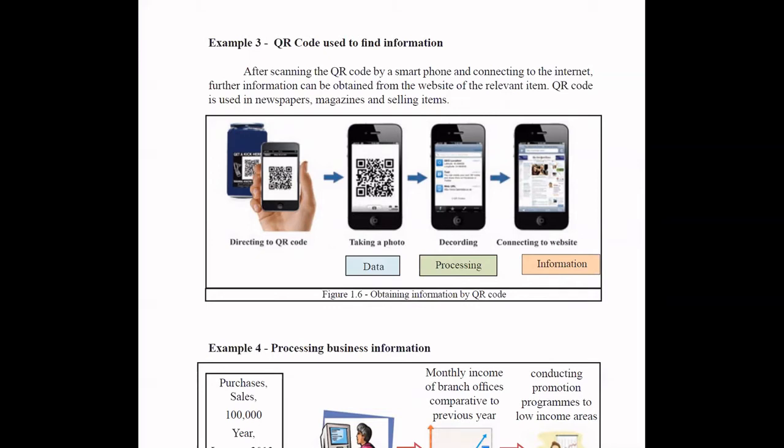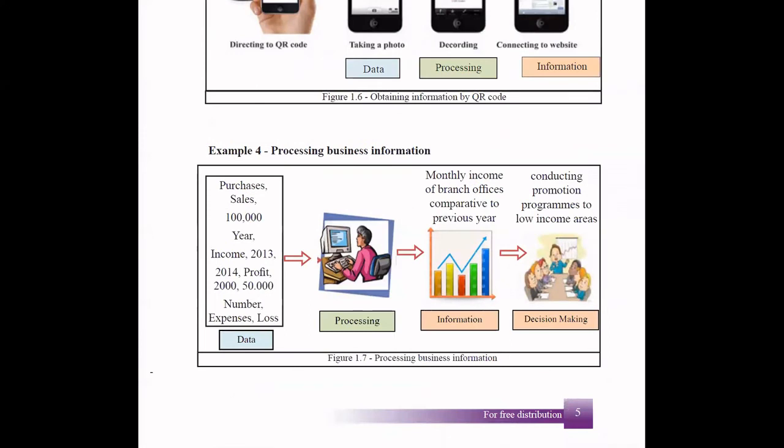The third example for information systems is when you're processing business information. In an organization, you'll have a lot of data: purchases, sales, income, expenses, losses, profits. So much data can be there, but those data in just some sheets won't give anything. You have to process them and put them as information, maybe graphs, reports, or presentations, so you can use them for decision making. For example, if you have monthly income presented in a graph like this, you can see this red color one is having low income, so you can do promotional programs to increase the income of those areas.